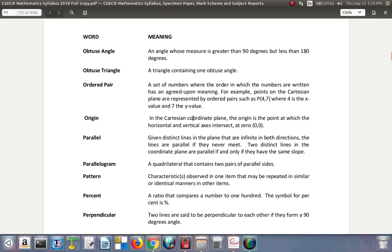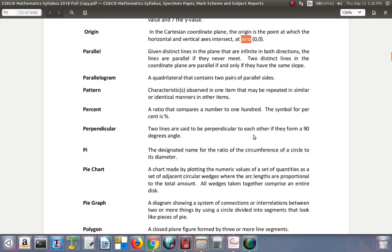Origin: in the Cartesian coordinate plane, the origin is the point at which the horizontal and vertical axes intersect at 0, 0. So those are the end of the O words. Next time we continue with the P words from parallel onwards.